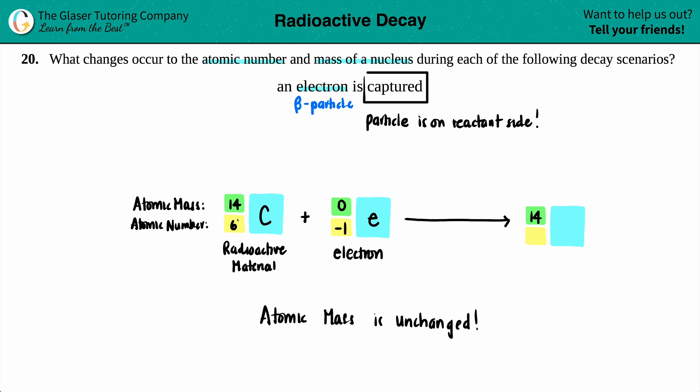But then what's going on with my atomic number? Six minus one, right? Or six plus a negative one, same thing. Six minus one is now a five. So your atomic number is going to change and it will decrease. And we'll say it will decrease by one.